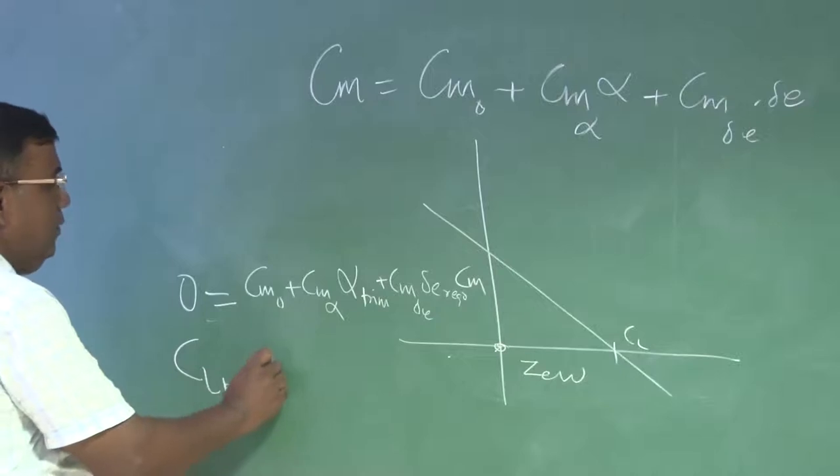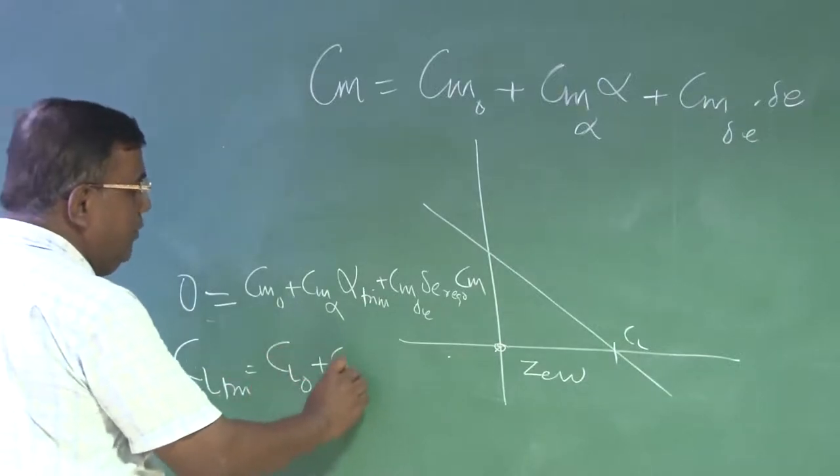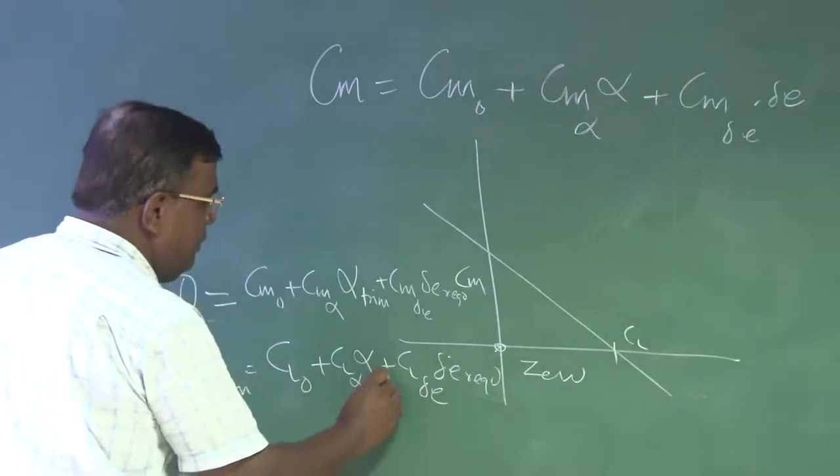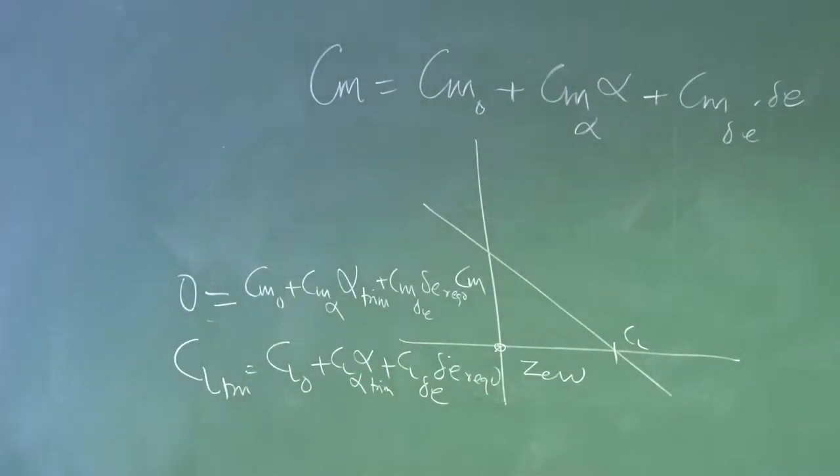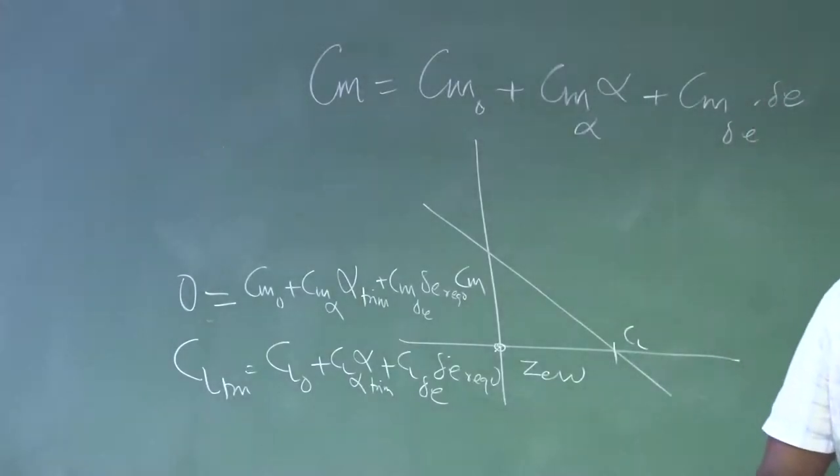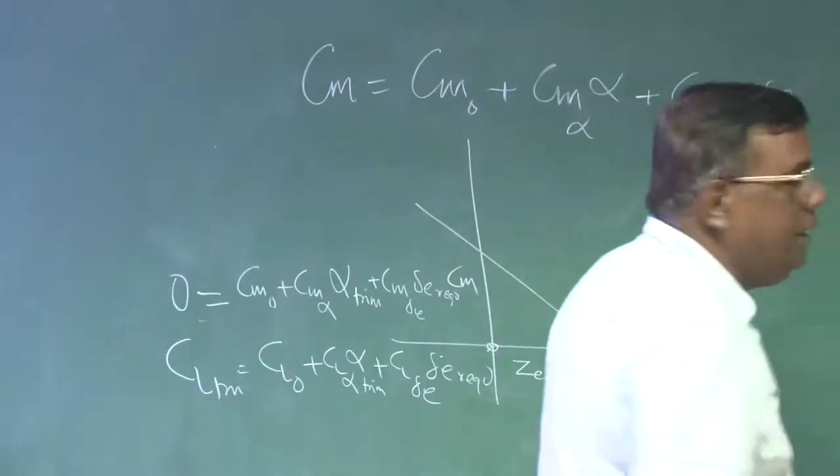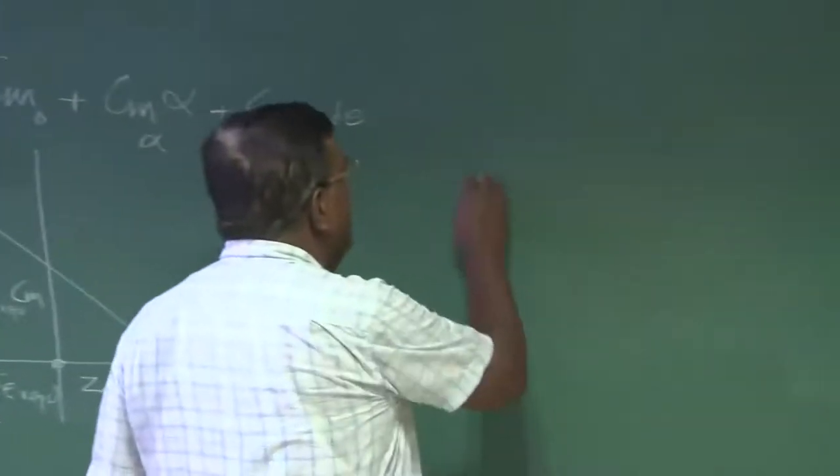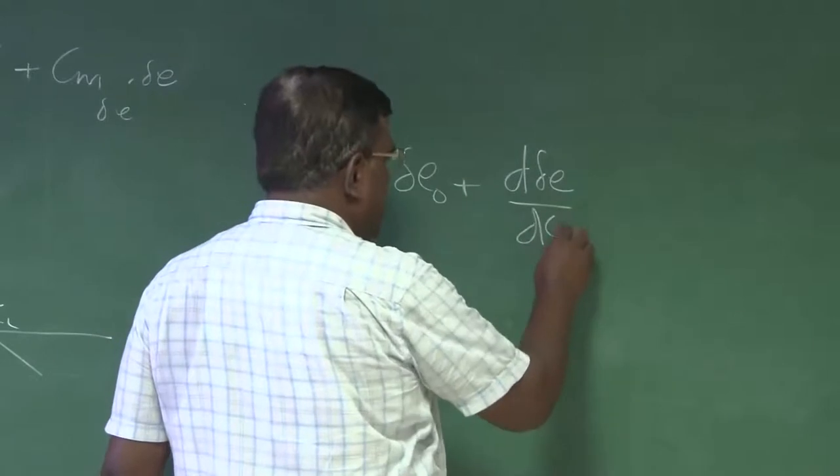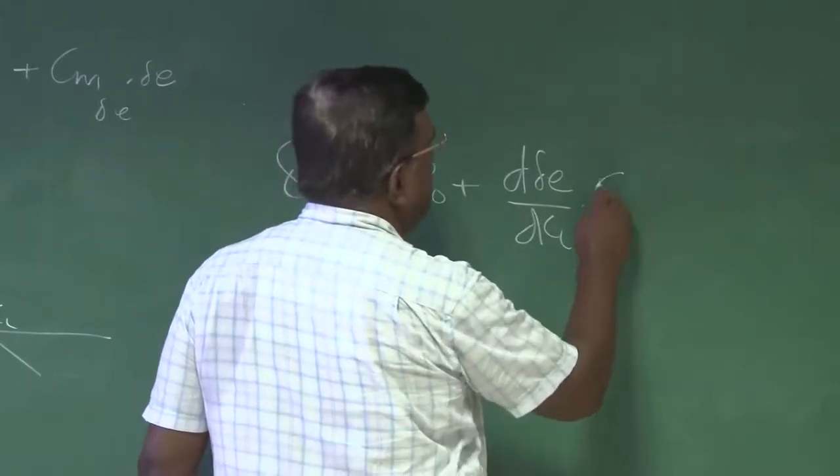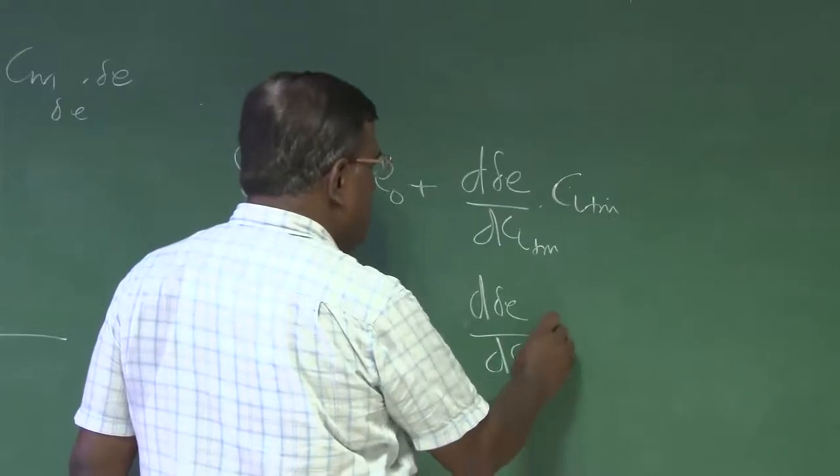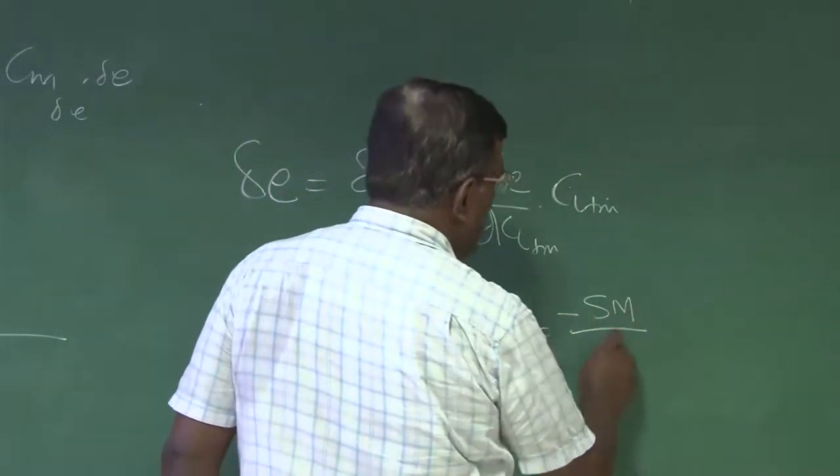If you recall, if I use these two equations, and for an approximate case where I neglect CL0, I can write delta E equal to delta E0 plus d delta E by dCL trim into CL trim, where d delta E by dCL trim is nothing but minus static margin by CM delta E.